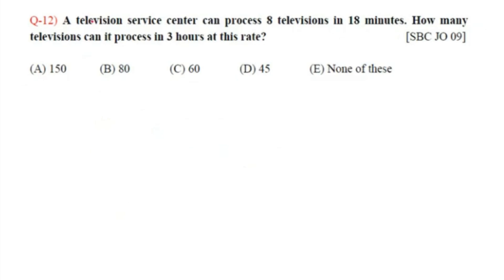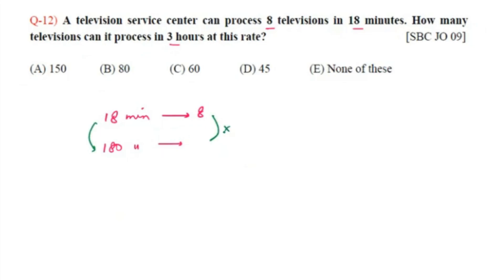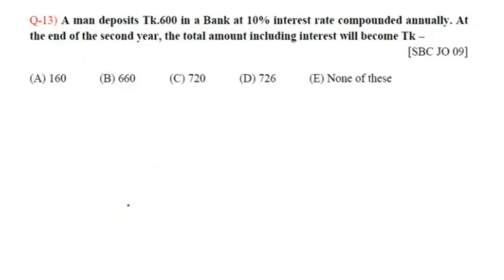Question number 12: A television service center can process 8 televisions in 18 minutes. How many televisions can it process in 3 hours? Convert 3 hours to minutes: 3 × 60 = 180 minutes. 180/18 = 10 times more, so 8 × 10 = 80 televisions. Option B, 80, is the answer.